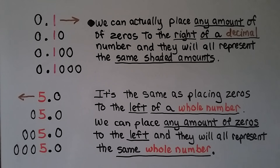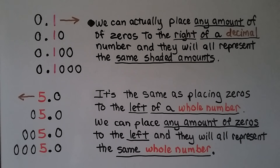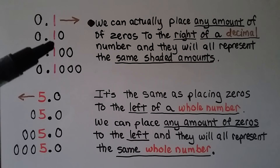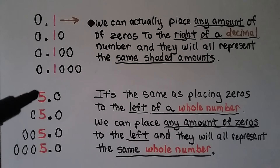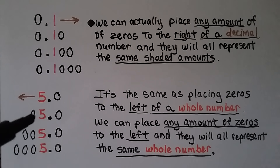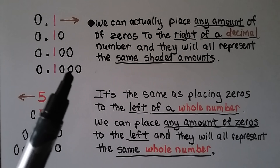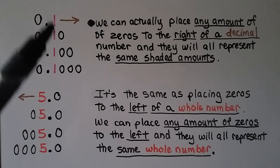We can actually place any number of zeros to the right of a decimal number and they will all represent the same amount. One tenth would be the same as 10 hundredths, which would be the same as 100 thousandths, and so on. It's the same as placing zeros to the left of a whole number — here we have the whole number 5, and if we put a 0 in the tens place, we still have 5 whole. It doesn't matter how many zeros we put in front of a whole number; we still have 5. And it's the same thing with decimals — we can put as many zeros as we want after this number and it's still going to be equivalent to 1 tenth.